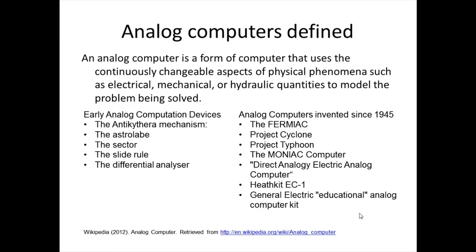On the right-hand column are several examples of analog computers invented since the end of World War II in 1945: the Fermiac, Project Cyclone, Project Typhoon, the Moniac computer, the direct analogy electric analog computer, a Heathkit kit-based computer called the EC1, and a General Electric educational analog computer kit marketed in the early 1960s. Electronic analog computers were also created. This information is taken from Wikipedia's analog computer page.